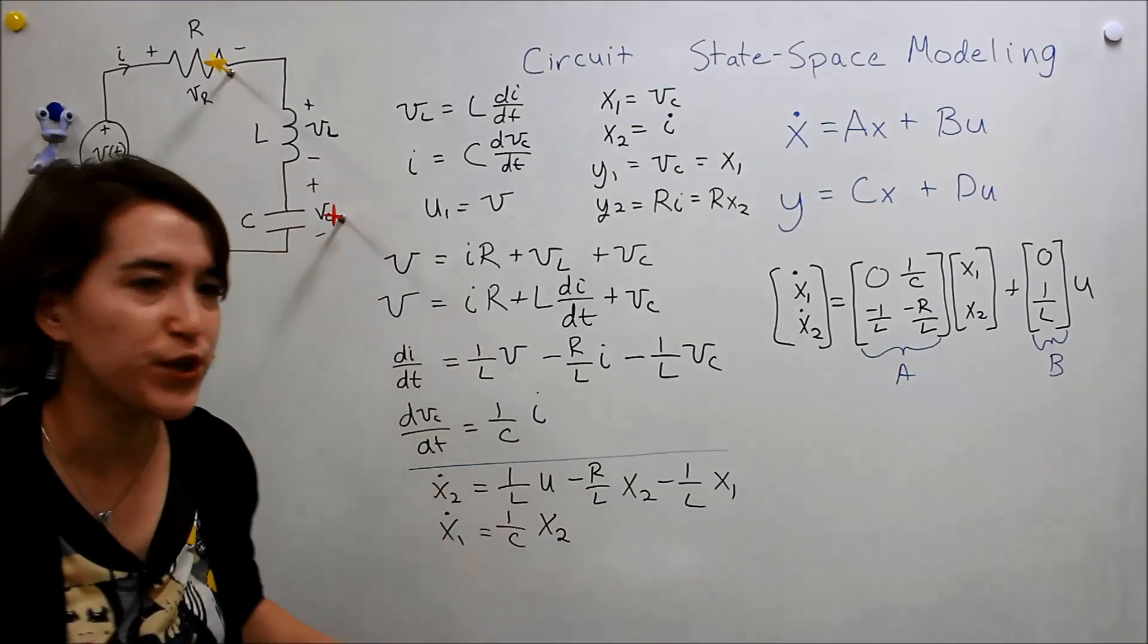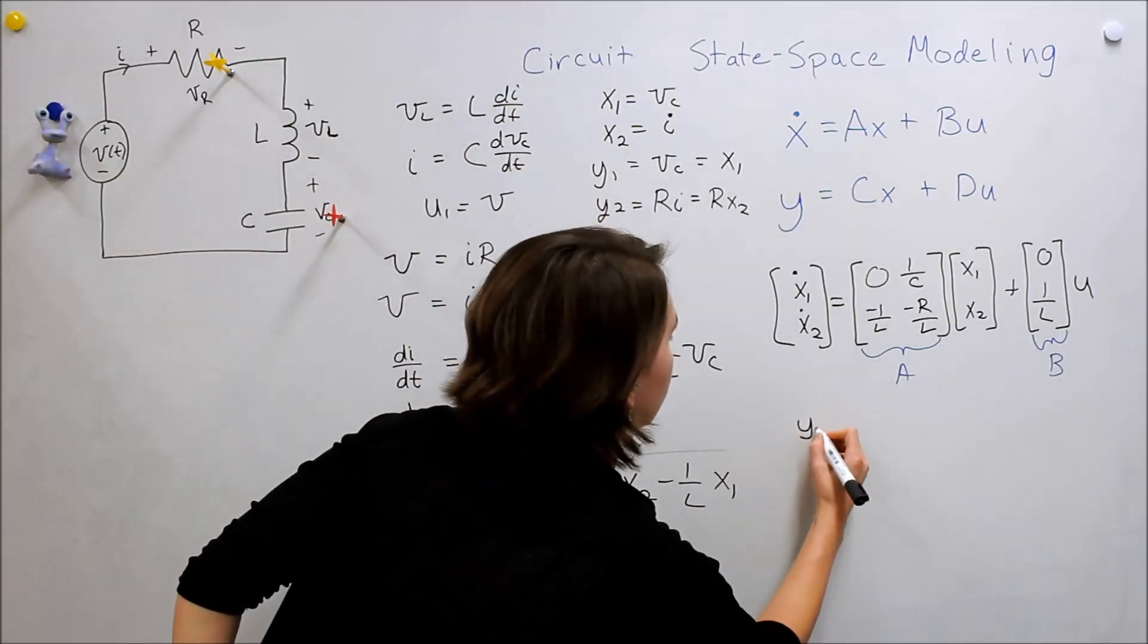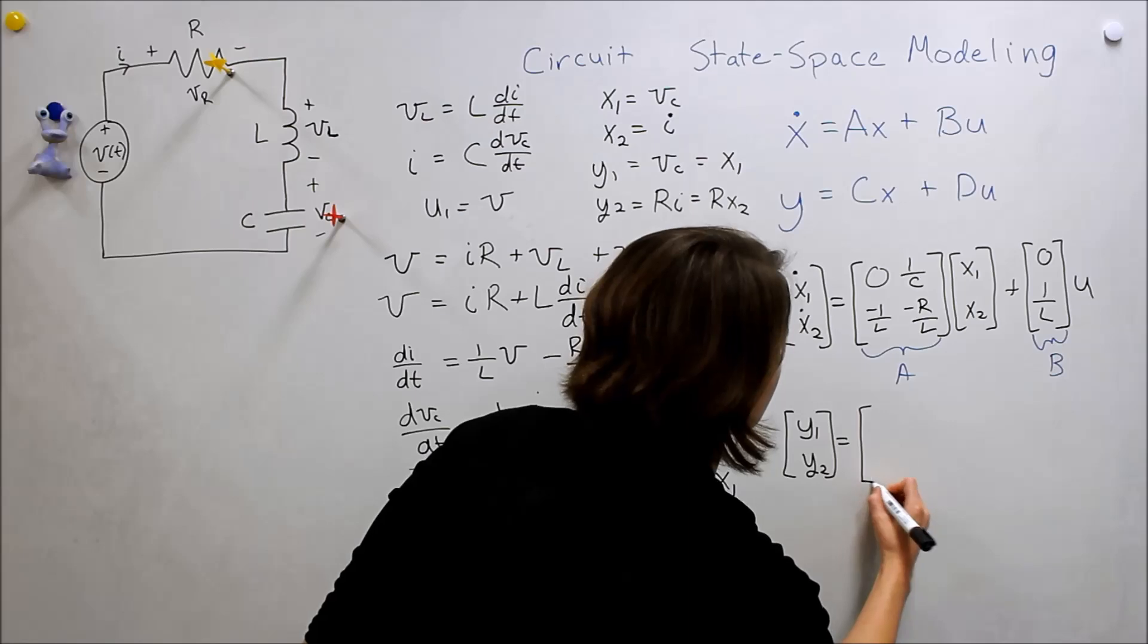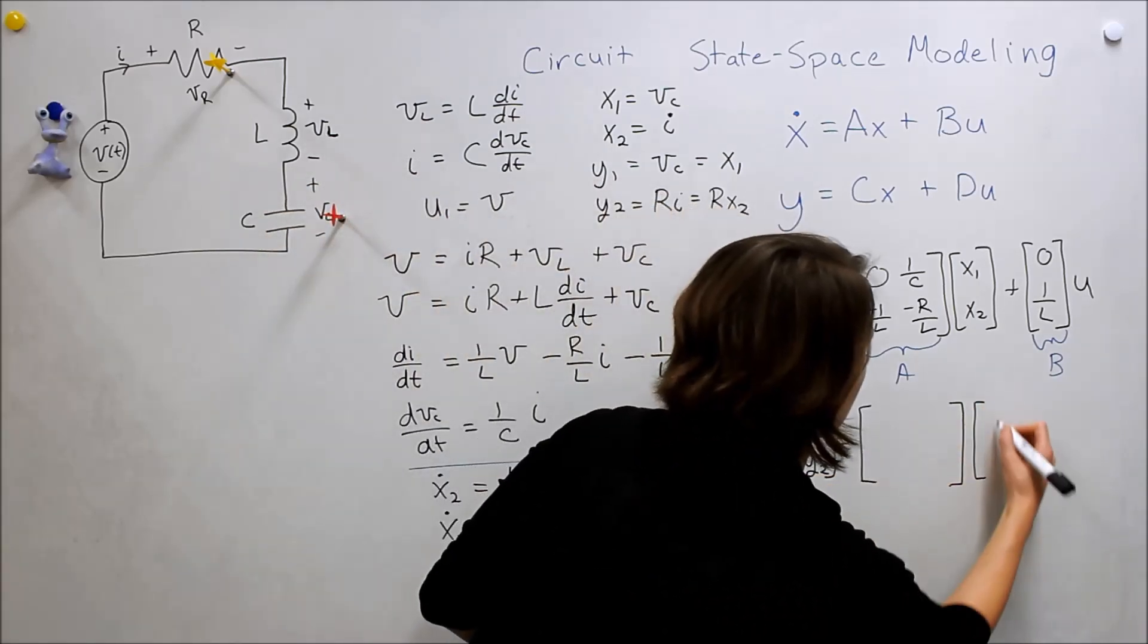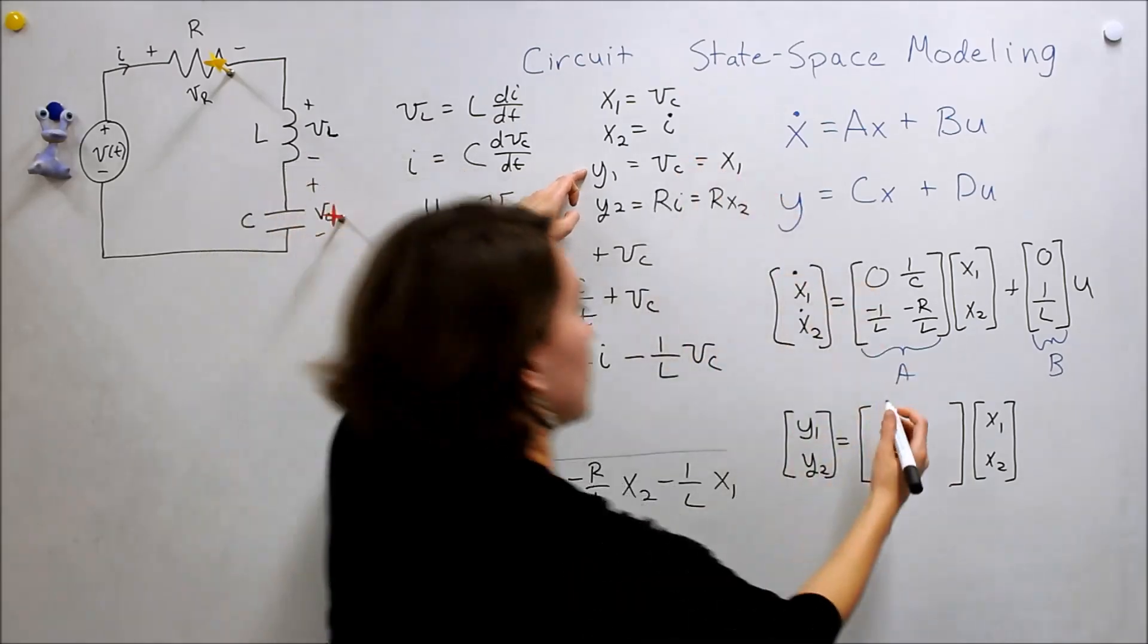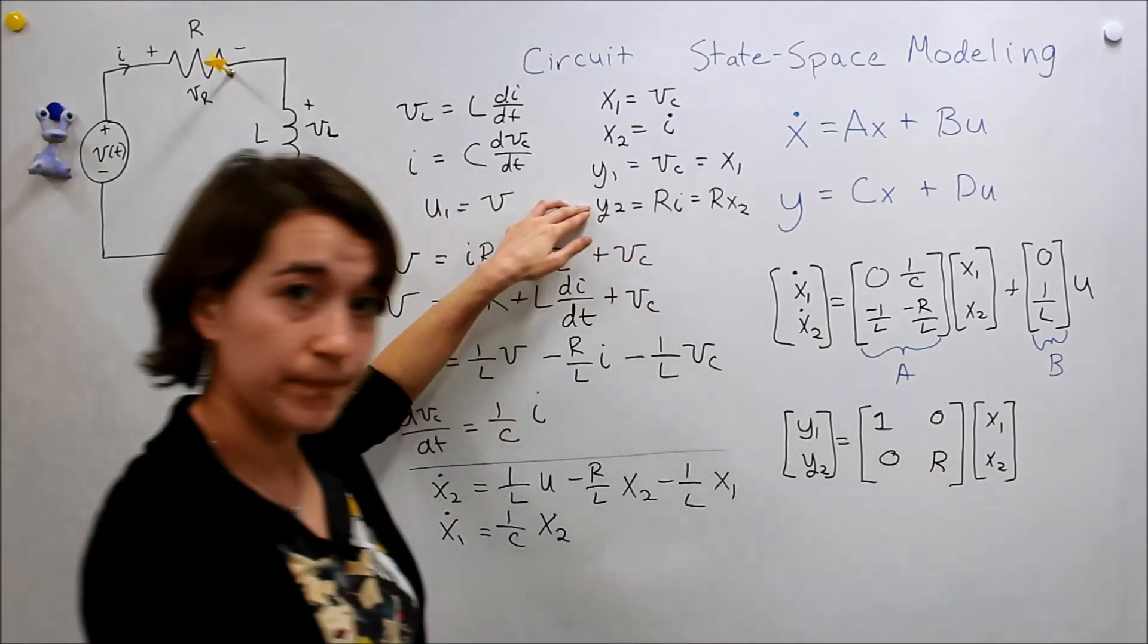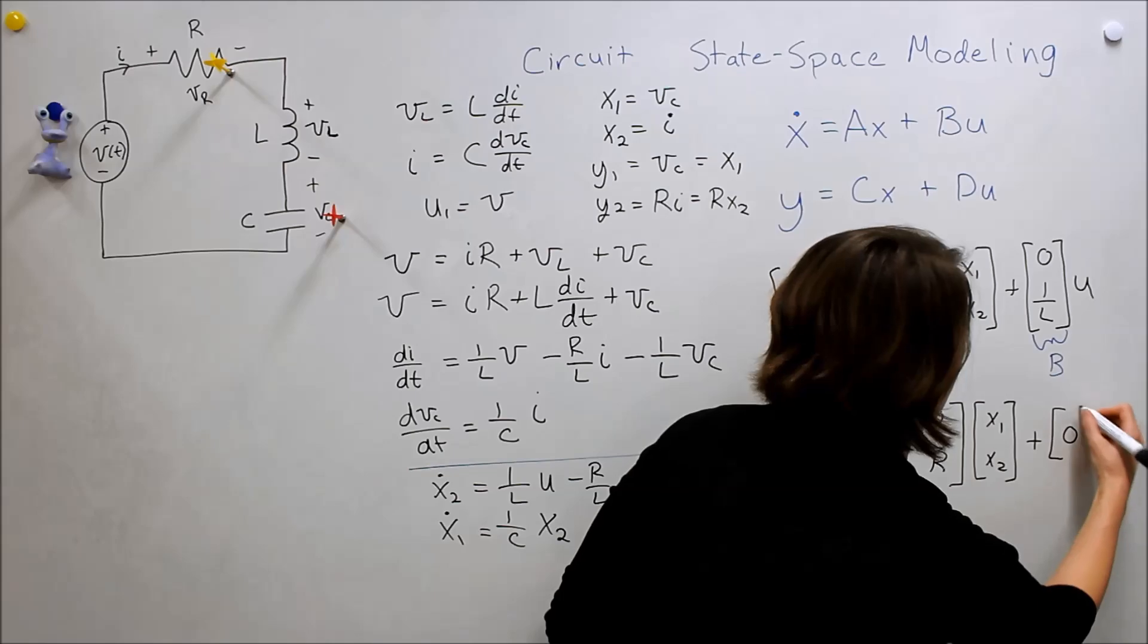Now, what about Y? We have 2 now, what do we do with that? We have already kind of written it here. So we're going to put Y1, Y2, and it's going to be equal to, we have to see how Y1 and Y2 depend on X1 and X2. So we're going to make a matrix here. We have two states and two outputs, so it's going to be a 2 by 2 matrix. Our Y1 only depends on X1, so we have 1 and a 0 here. Our Y2 depends only on X2 and is multiplied by R, so we have R here and a 0 here. And then they don't depend on U, but we should just be proper and write down D here, so 0 times U.